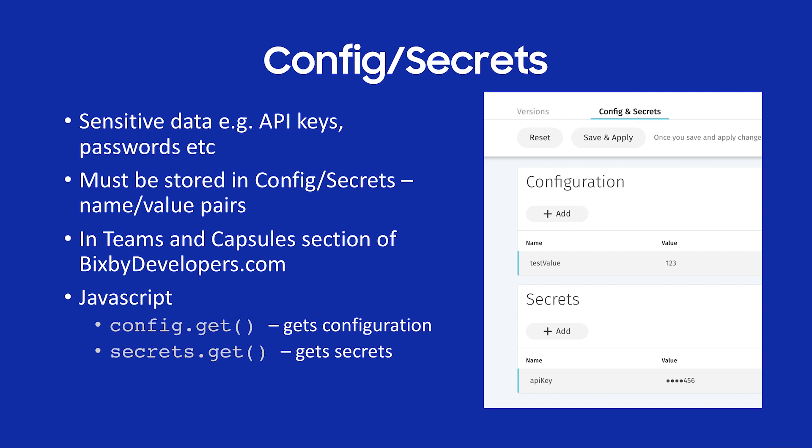For API keys, passwords, and anything sensitive you don't want in your source code, you store those in config and secrets. This is on bixbydevelopers.com in the Teams and Capsules section — once you've submitted a capsule, you can set up config and secrets as name-value pairs. In your JavaScript, use config.get to retrieve configuration data, and secrets.get to retrieve secrets data. This is the place where you store sensitive data that you don't want in your source code.